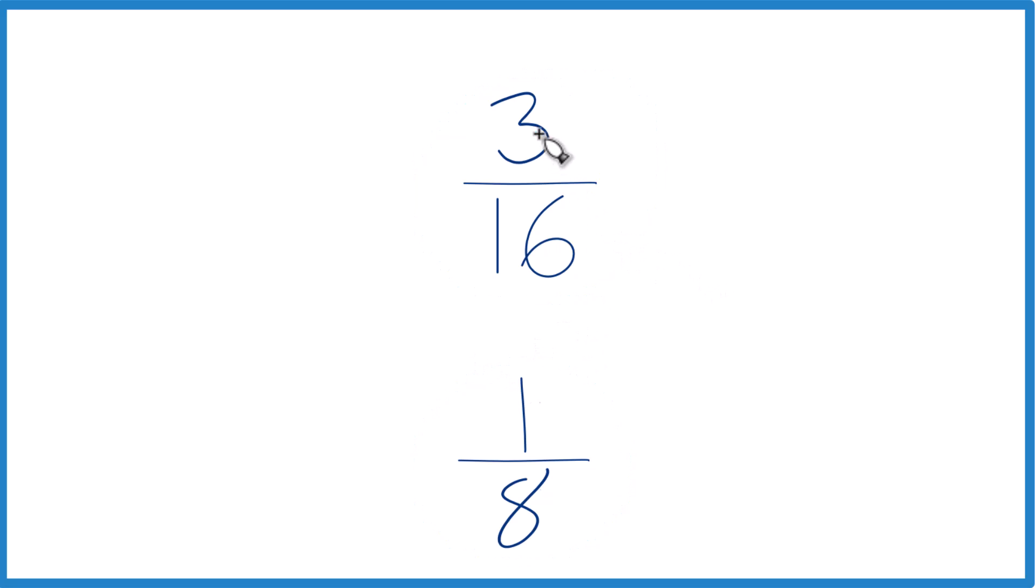So the first way is you could just divide 3 by 16 on a calculator, get a decimal, then divide 1 by 8, get a decimal, and compare them. And you'll see when you do that, that 3 16ths, that's the larger fraction.